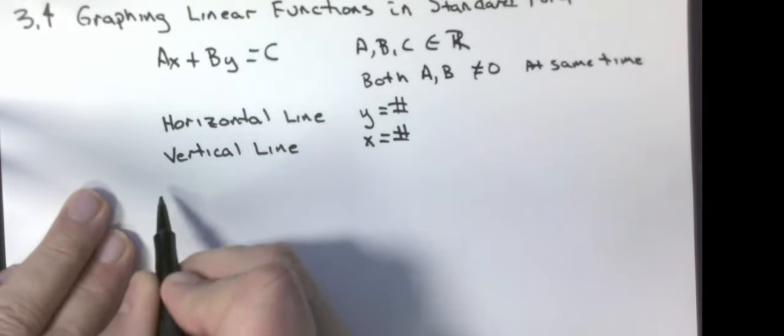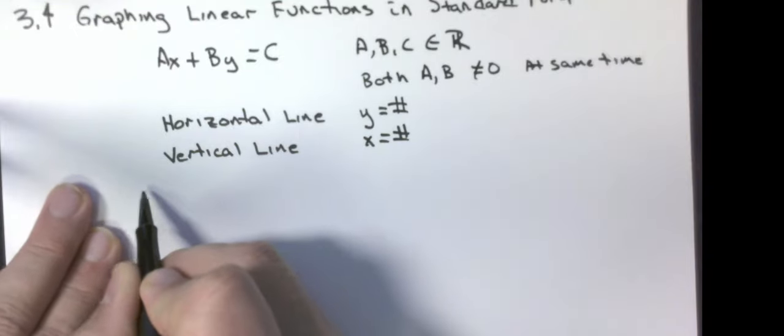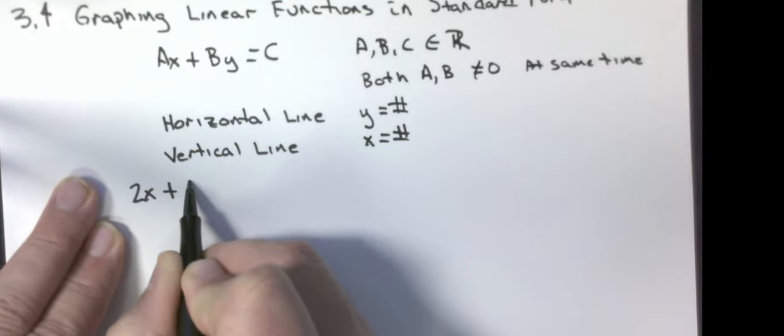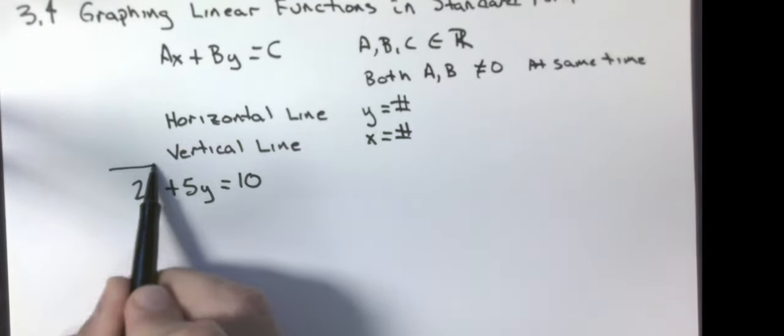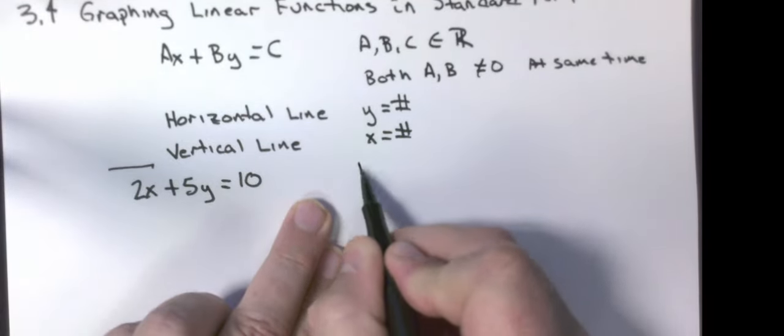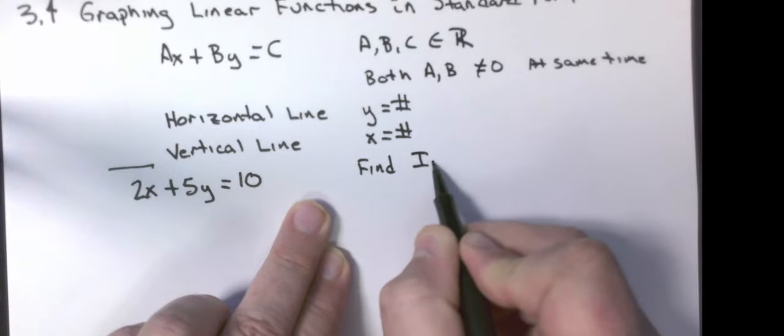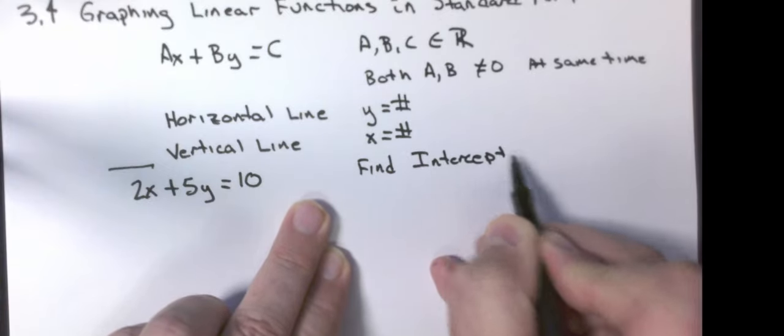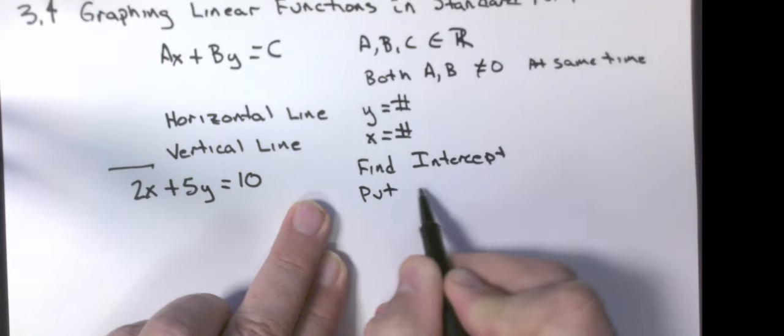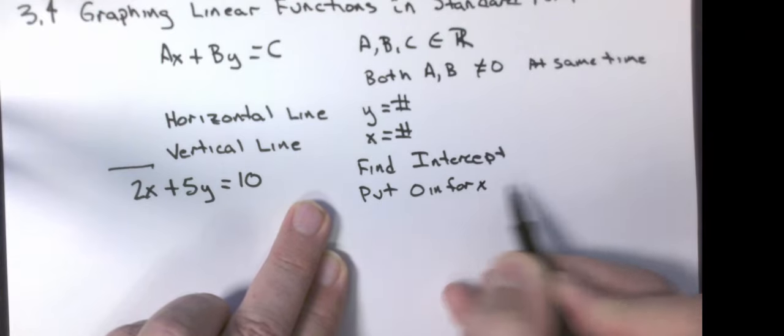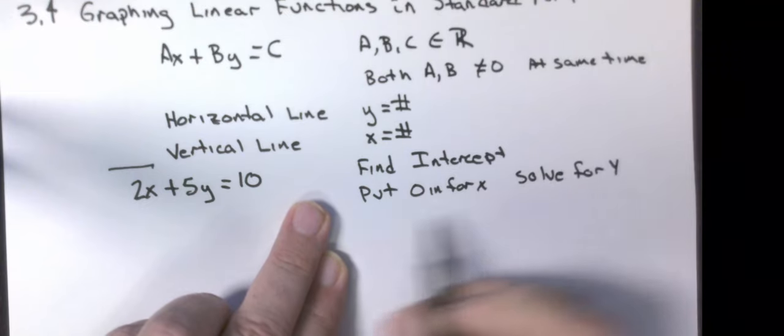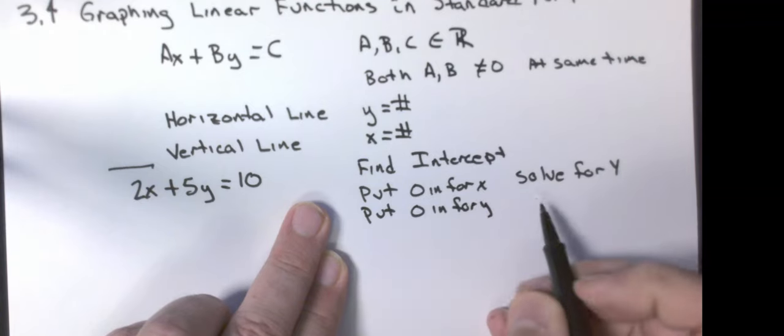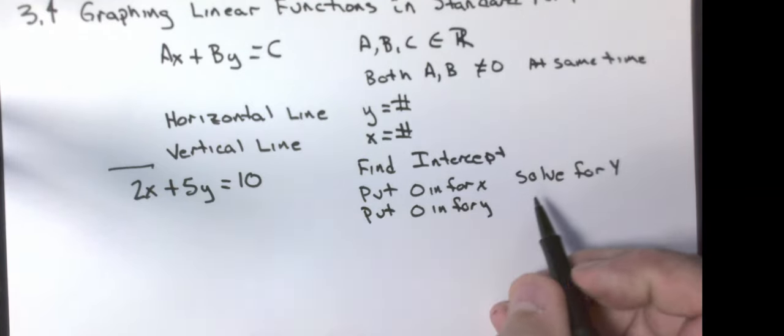Let's just do some examples. I'm going to show you the method to do this. 2X plus 5Y equals 10. What we're going to do to graph this is we're going to find the intercepts. We're going to put a zero in for X and then solve for Y. We're going to put a zero in for Y and solve for X.